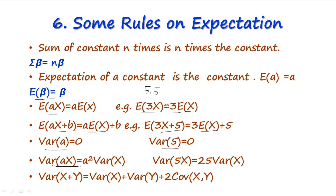The next rule is quite important and often used: Var(aX) = a²·Var(X). For instance, Var(5X) = 5²·Var(X) = 25·Var(X). The last rule is that for two random variables X and Y, Var(X + Y) = Var(X) + Var(Y) + 2·Cov(X, Y). When X and Y are independent, the covariance of X and Y is 0, so Var(X + Y) simplifies to Var(X) + Var(Y). We will discuss these rules further in the next video.